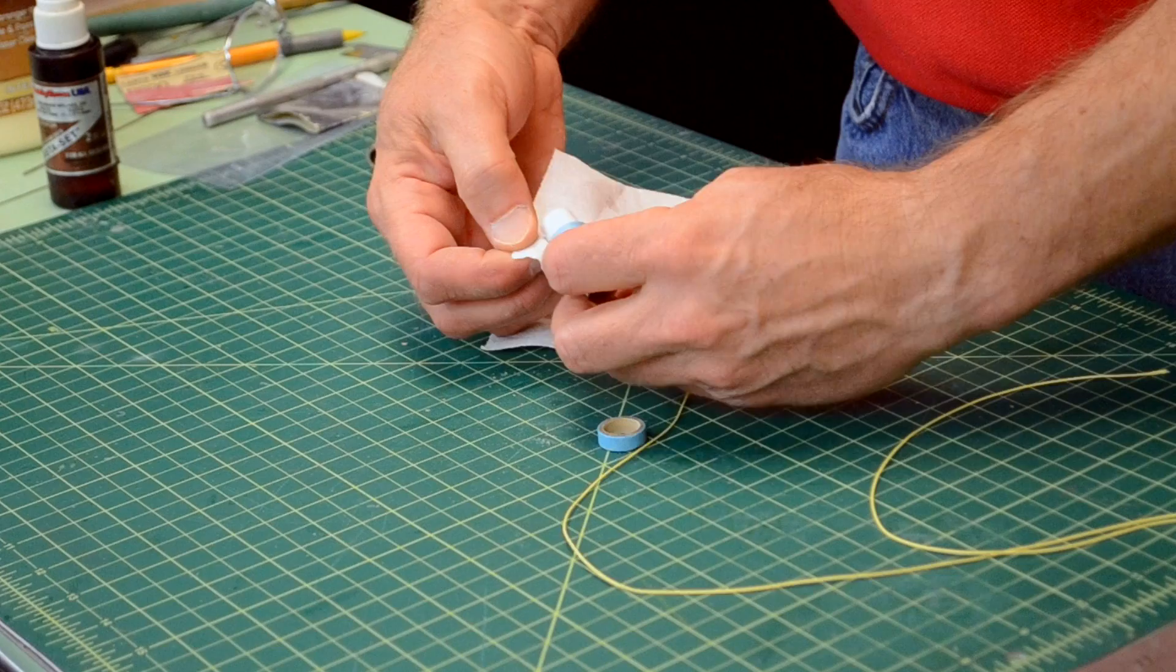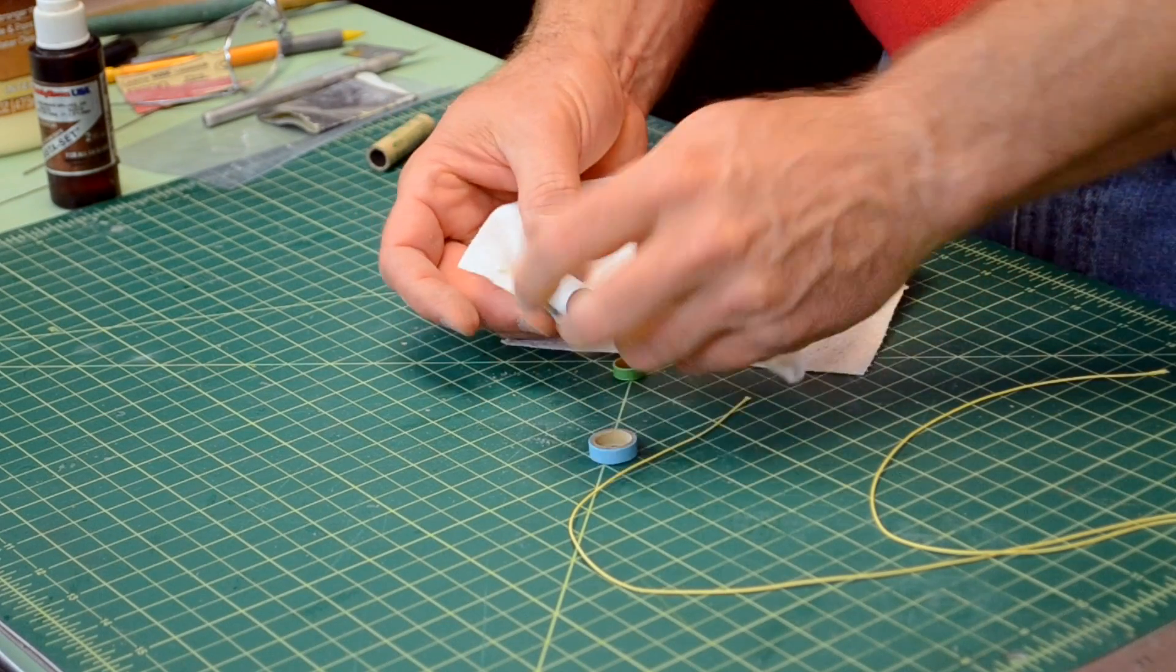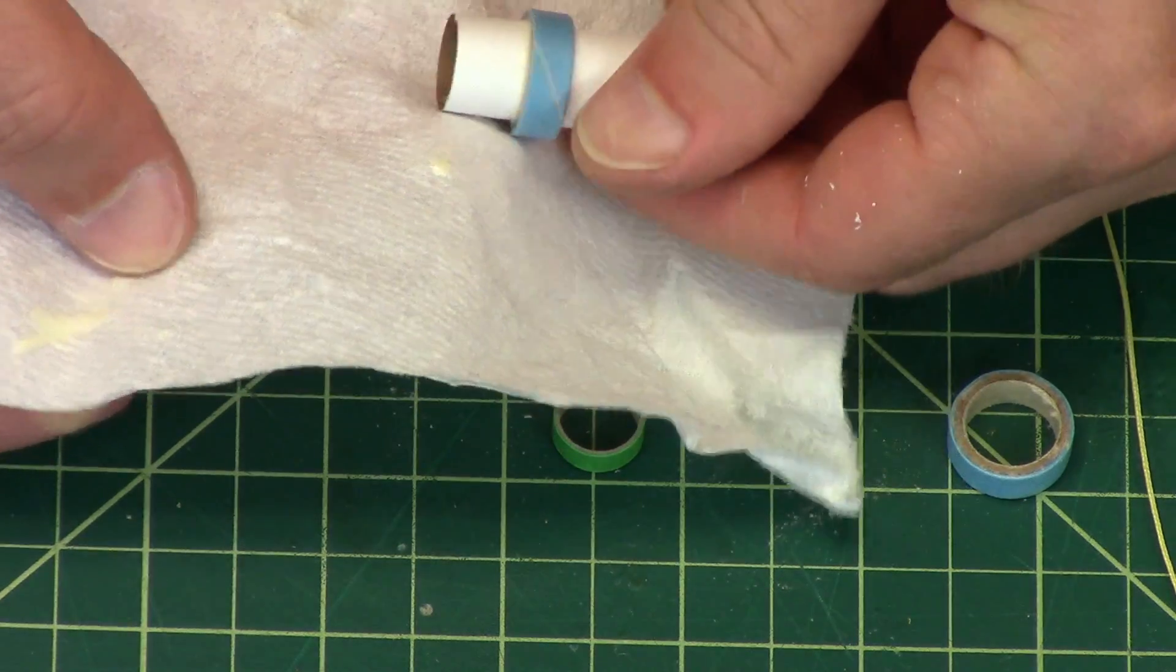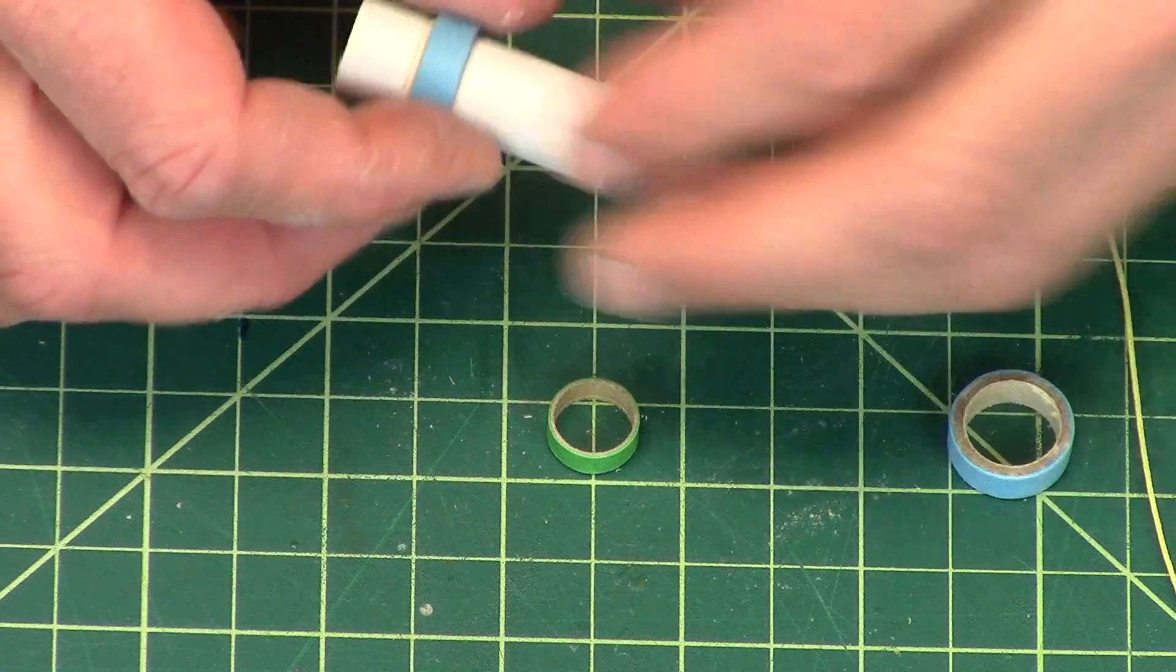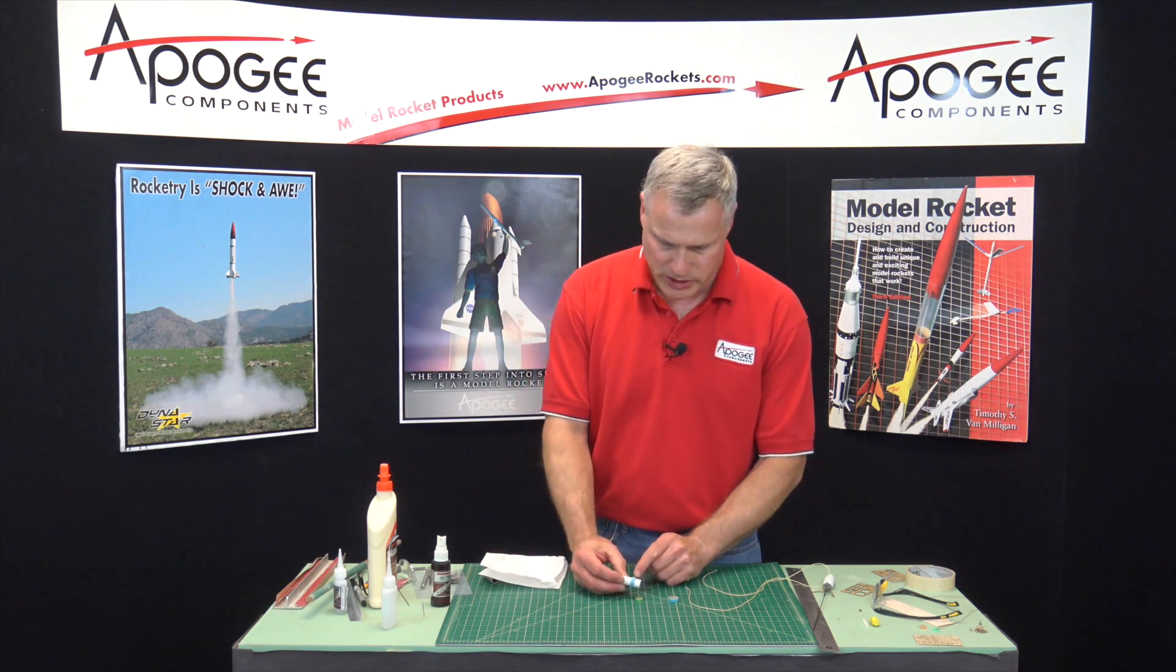Let's wipe off that excess glue. Make sure there's no glue on the outside of the blue ring as well. Wipe that off good. You only get one chance at it.